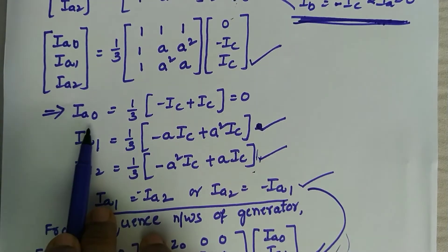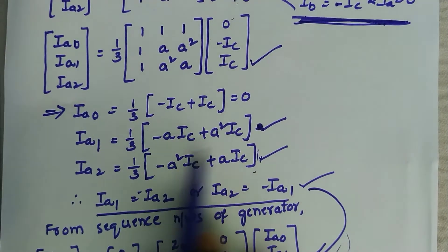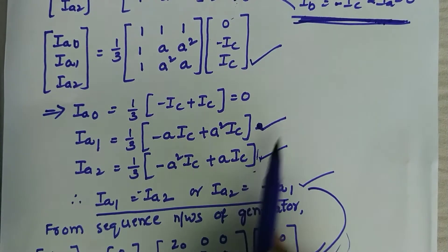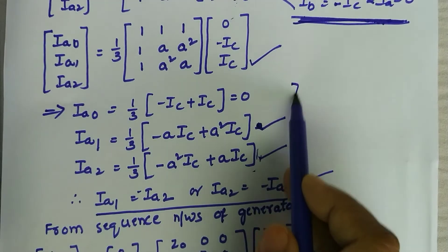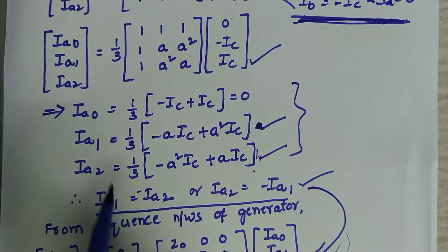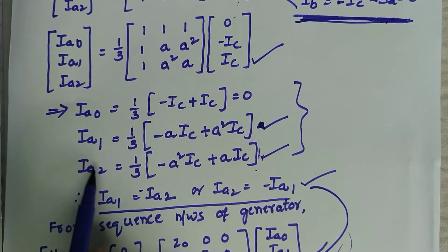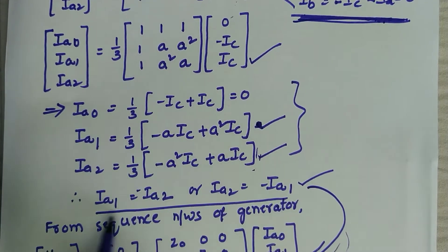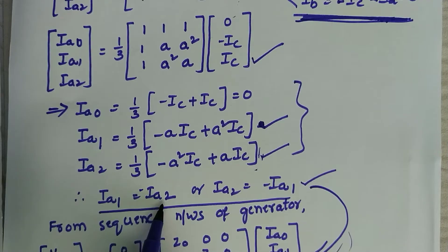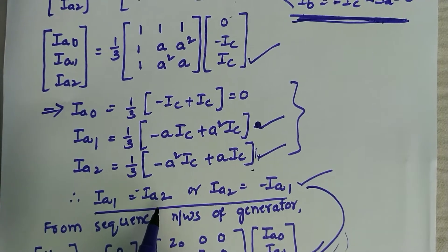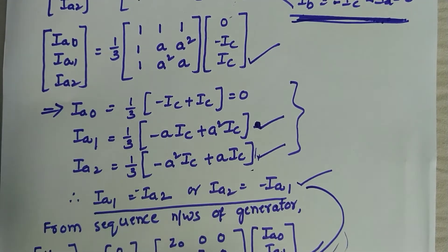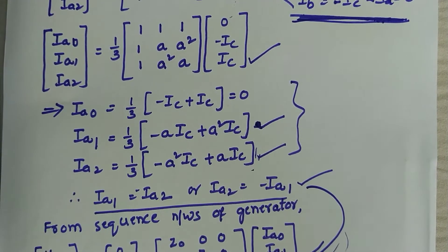Converting this matrix equation into normal equation form, we get the relations for Ia0, Ia1, and Ia2. From these three equations, we can observe that taking minus as common gives us Ia2 equals minus Ia1, or equivalently Ia1 equals minus Ia2. Also Ia0 equals 0.